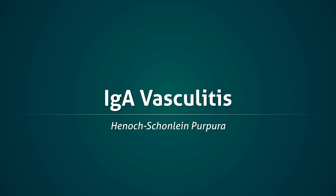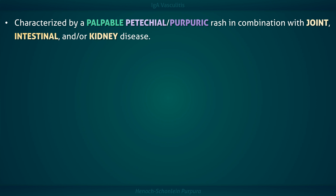IgA vasculitis, commonly referred to as Henoch-Schönlein purpura, is characterized by a palpable and petechial purpuric rash that occurs in combination with joint, intestinal, and/or kidney disease. IgA vasculitis typically occurs following an upper respiratory tract infection and begins with a low-grade fever and constitutional symptoms.